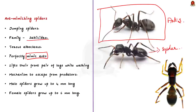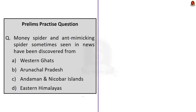Ant mimicking spiders get their name because they perfectly mimic ants by lifting their front pair of legs while walking, as a mechanism to escape from potential predators. Only three species of this genus have been reported from India and this is the first species reported from the Western Ghats. Male spiders of this species grow up to 4 mm long and females grow up to 6 mm long.